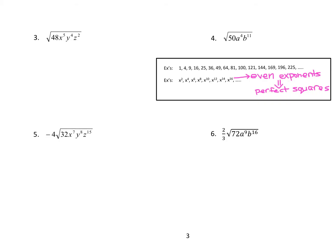Okay, I just copied this list from the top of the screen so I didn't have to keep going back and forth, and we're going to use this for reference. So number 3 — if we look under our radical, we see some things that are perfect squares and some things that are not. Because not everything is a perfect square, we want to break this up into two separate radicals: our perfect square radical and our leftovers.